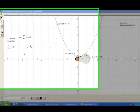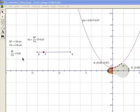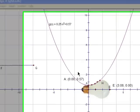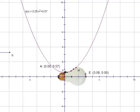Thus, I got the slope was about 0.25. So the equation of the parabola is about 0.25x squared plus 0.57. That 0.57 is the y-intercept of A.